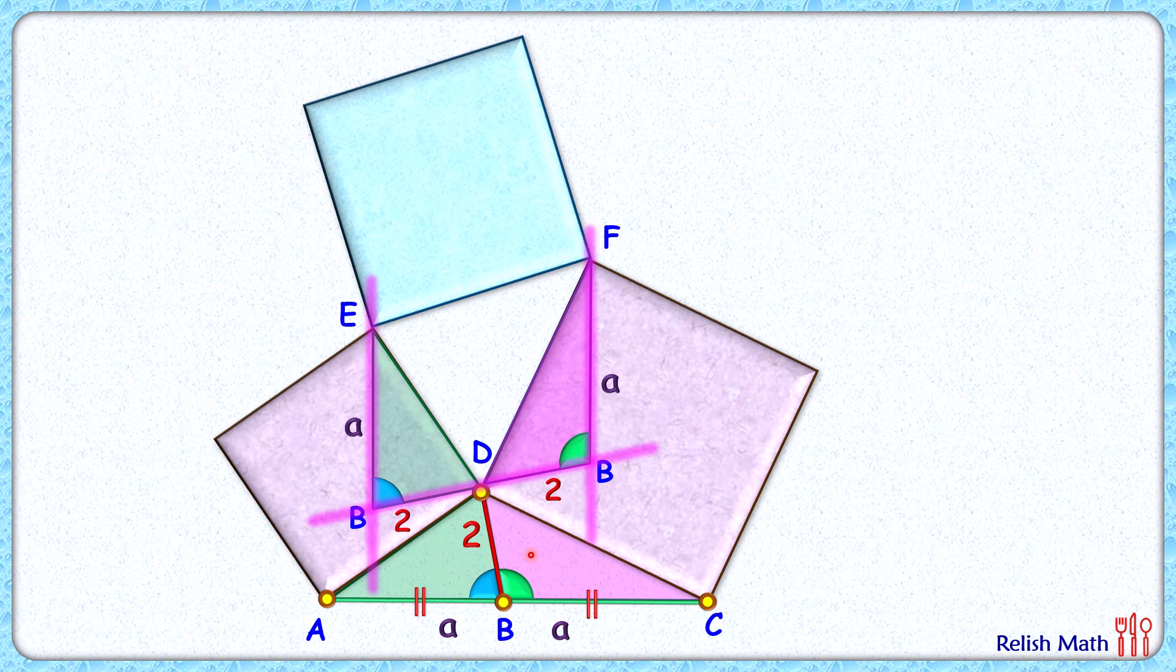Thus we can say that EB and FB they are parallel to each other. So also this EB and FB, they are equal in length.